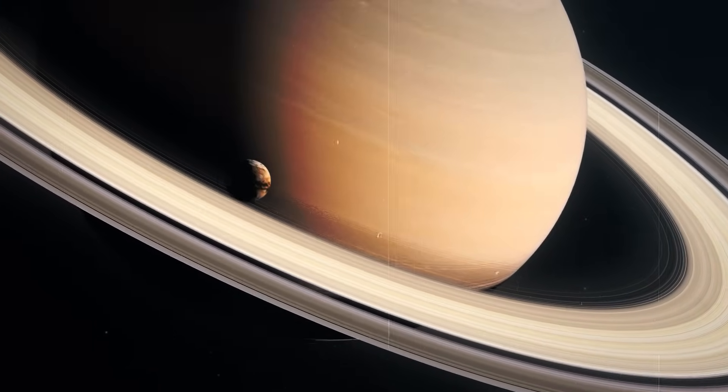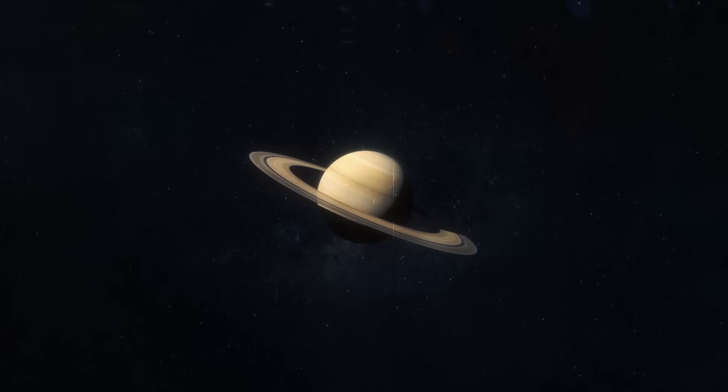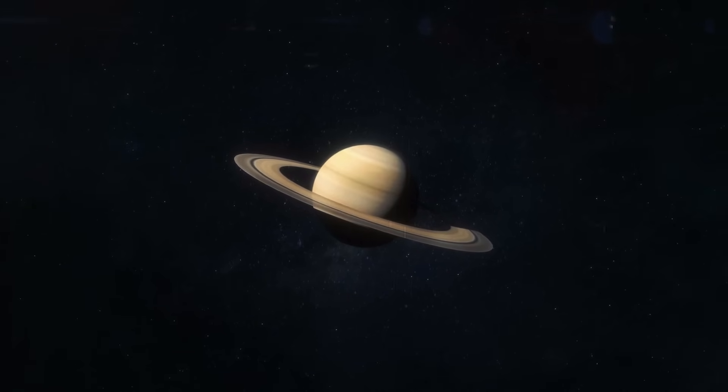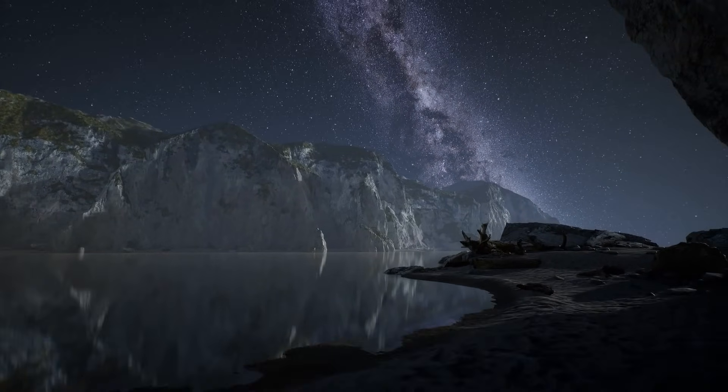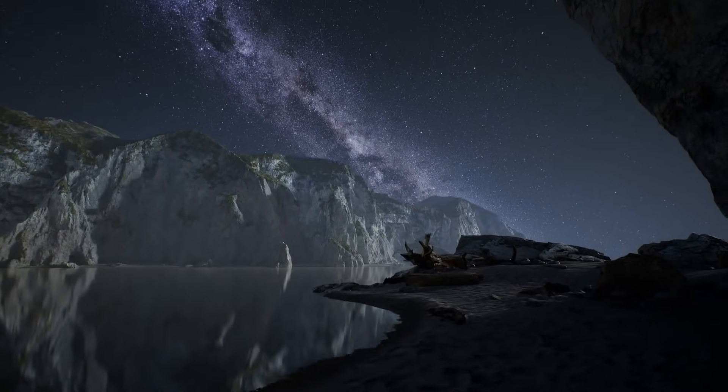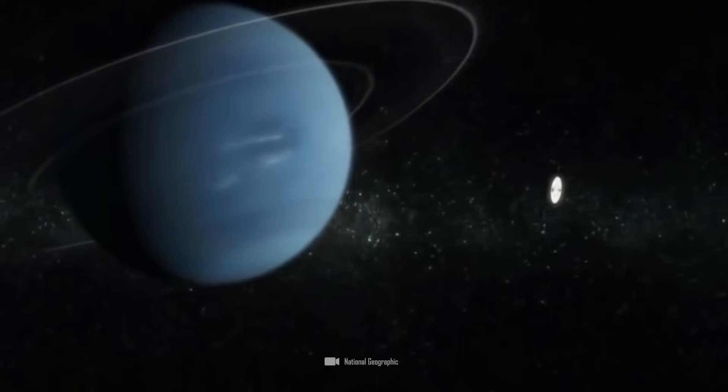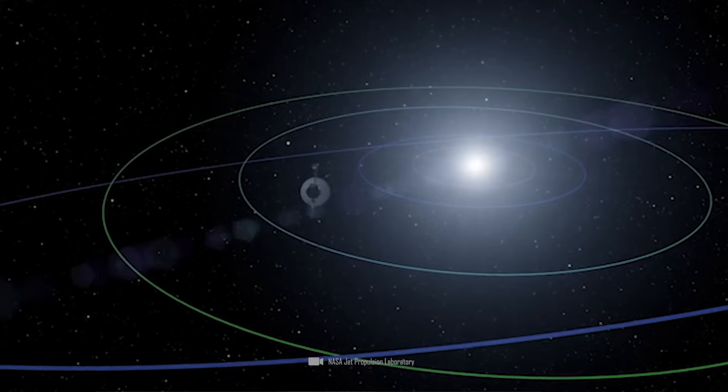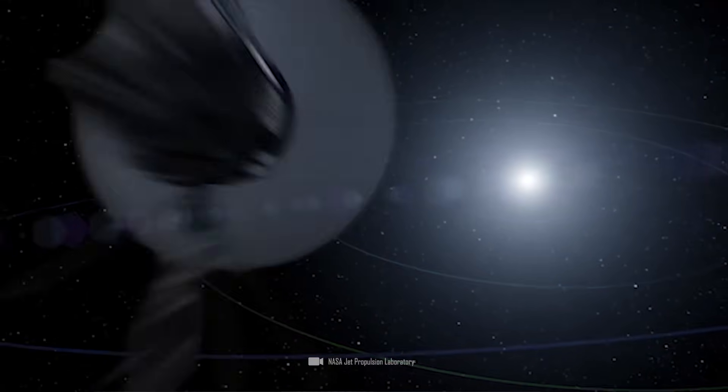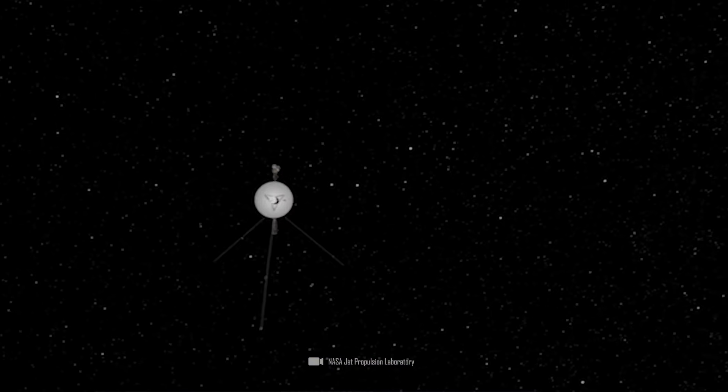Here too, the two probes worked together brilliantly. Voyager 2 reached Saturn in August 1981 and supplemented the studies on Saturn. Among other things, its data served to clarify questions that had arisen after Voyager 1's visit. Voyager 2 then continued its mission by flying on to Uranus and Neptune, while Voyager 1 embarked on an orbit that would take it directly to the end of the solar system.